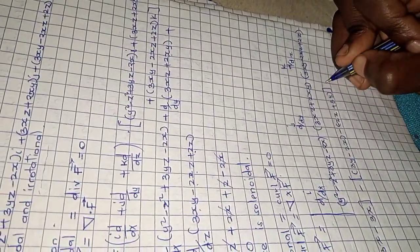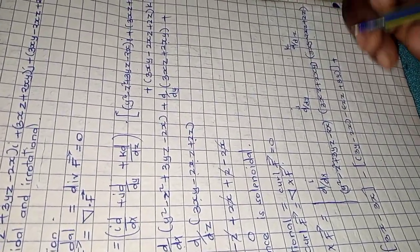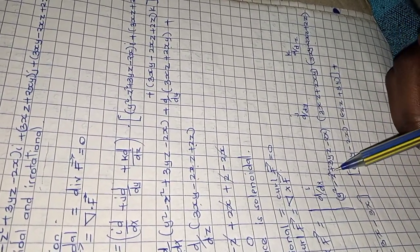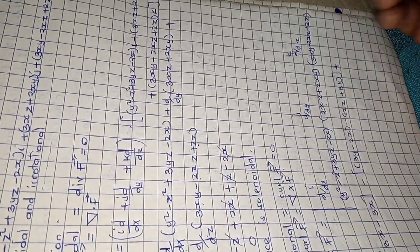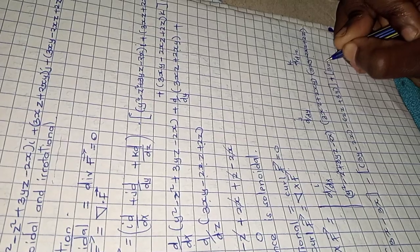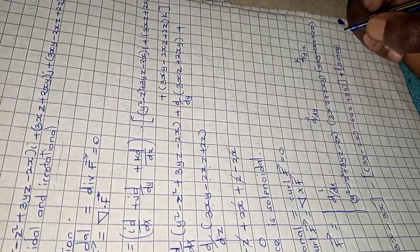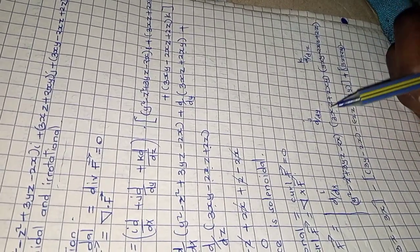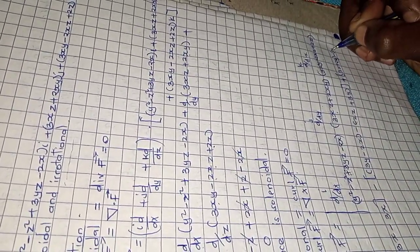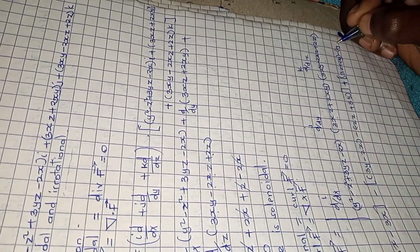For the k component: ∂/∂x of (3xz + 2xy) gives 3z + 2y, minus ∂/∂y of (y² − z² + 3yz − 2x) gives 2y + 3z. So (3z + 2y) − (2y + 3z) = 0.